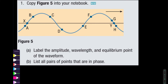The first question asks us to copy this figure into our notebook — you should do it for your notes. From this figure, they want us to label the amplitude, the wavelength, and the equilibrium point of the waveform. The amplitude gives you the maximum displacement from equilibrium of the particle. We need to first recognize where the equilibrium line is. The wave is moving to the right but the displacement is going up and down; this is a snapshot, so it's just at one given moment in time.